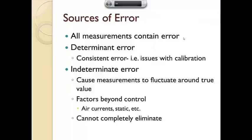In every measurement, there will always be error. Some of it can be determinate error, which is consistent, such as those with calibration, so you're always off by about five milliliters or something along those lines. Or indeterminate error, which is more of a human error issue, which causes fluctuation around the true value or factors beyond your control, like air currents or static, that cannot completely be eliminated.